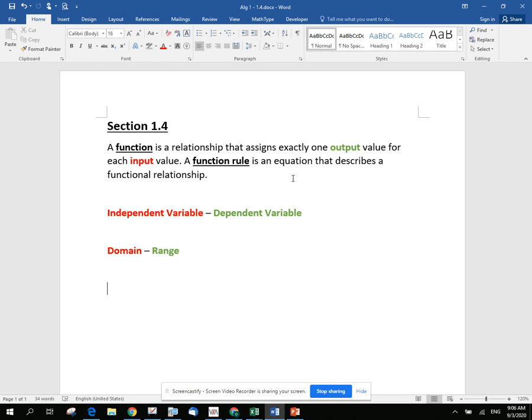And I might as well just go ahead and talk about domain and range now too, so I don't have to keep clicking back and forth. Domain is the set of all possible inputs. The range is the set of all possible outputs. Here's the most important thing I think I could tell you about domain and range besides the definition. And that is that they're singular.